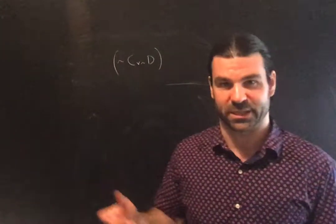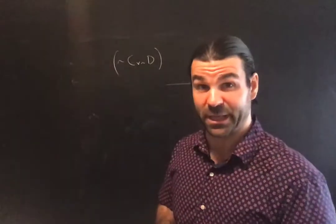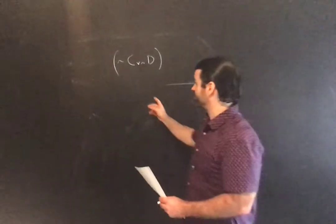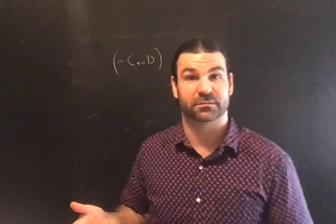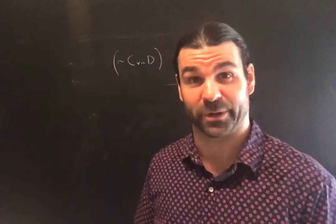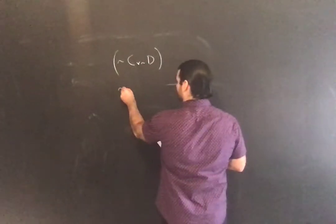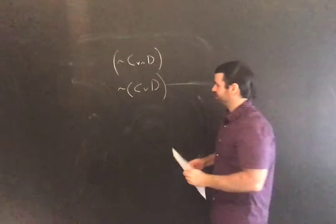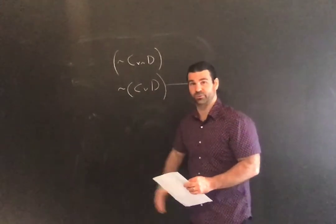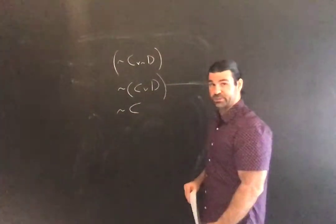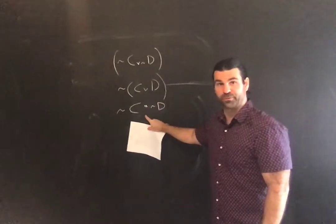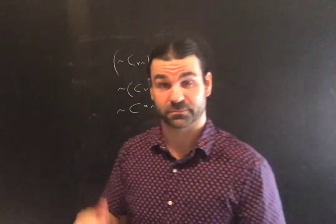Think of the example: you will get an A or a B. If I say you will neither get an A nor a B in this class, are you worried? Yes — it means you're getting a C or worse. But if I say either you're not getting an A or you're not getting a B, that can be satisfied and you can still get an A, because you didn't get a B. So 'neither C nor D' is properly symbolized as 'not the case that either C or D,' which by De Morgan's rule is equivalent to 'both not C and not D.'